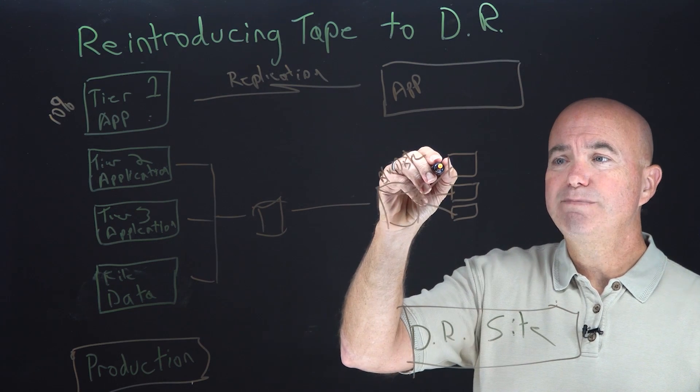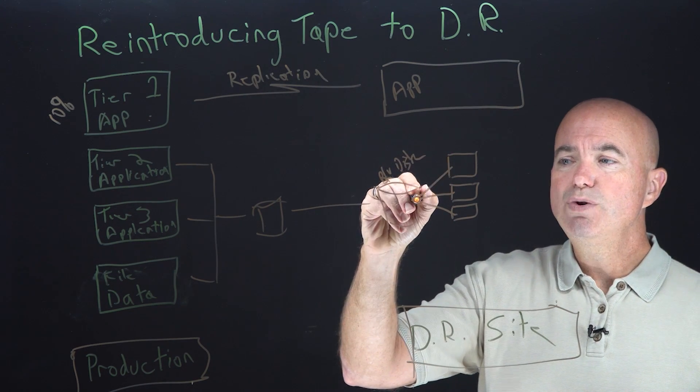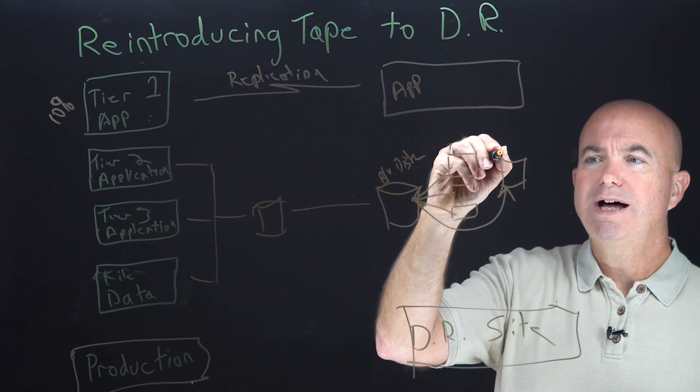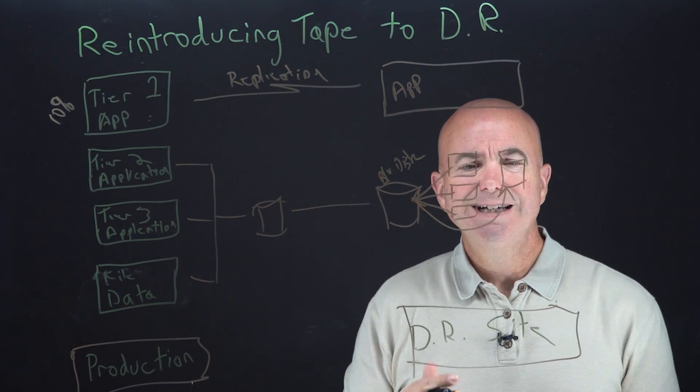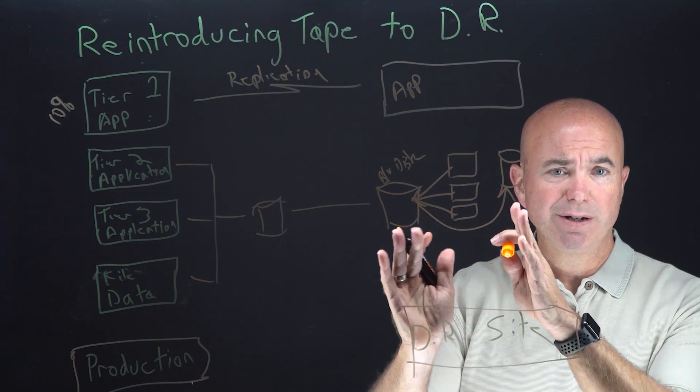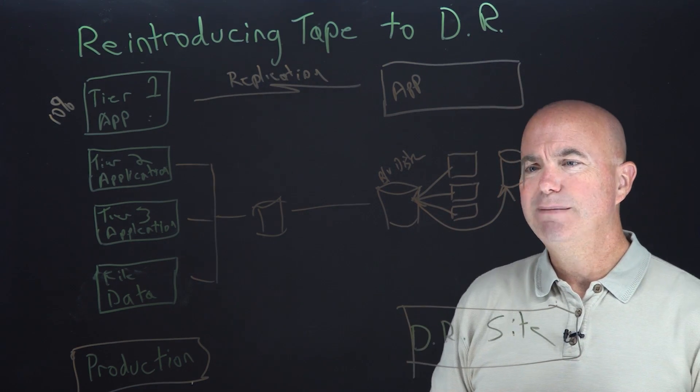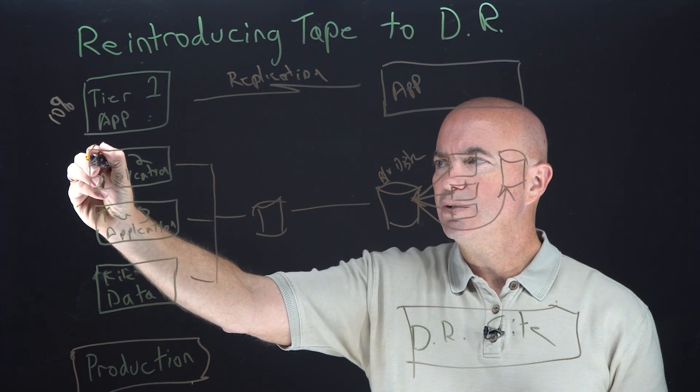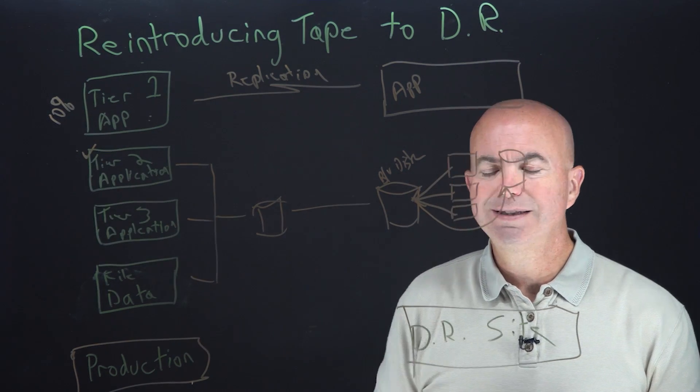Now that brings some negatives to it. Obviously, the backup disk isn't necessarily designed for high performance, but I am able to get the application up and running. Probably at some point I will move this data to a more production class storage array and I may take some outage, frankly, to make that happen. So that's the tier two applications taken care of right there.